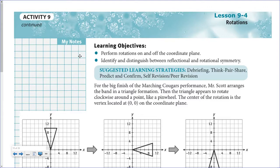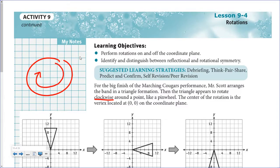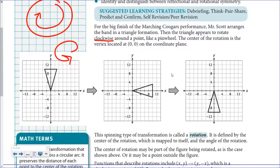If you're having trouble thinking about clockwise, think about a clock — your hands go in this direction, that's clockwise. If it goes the other direction, that is against the direction of the clock and would be considered counterclockwise.